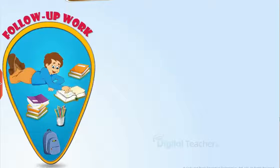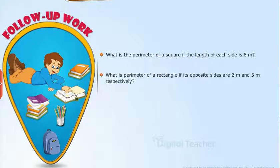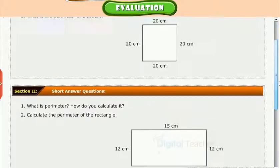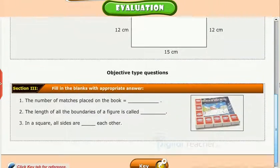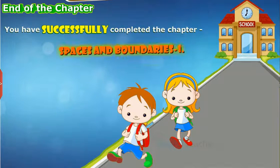Follow-up work: What is the perimeter of a square if the length of each side is 6 meters? What is the perimeter of a rectangle if its opposite sides are 2 meters and 5 meters respectively? Evaluation: Test your understanding of the chapter by taking the mock unit test. You have successfully completed the chapter, Spaces and Boundaries 1.